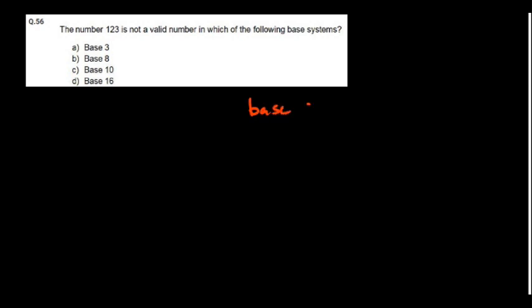The number 1, 2, 3 is not a valid number in which base system? In base 2 we use only 0 and 1. In base 3 we use 0, 1, 2 — not 3. So 1, 2, 3 is not a valid number in base 3.